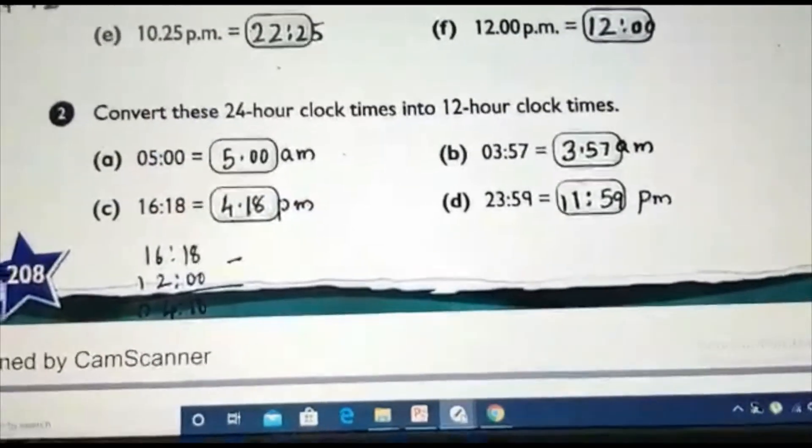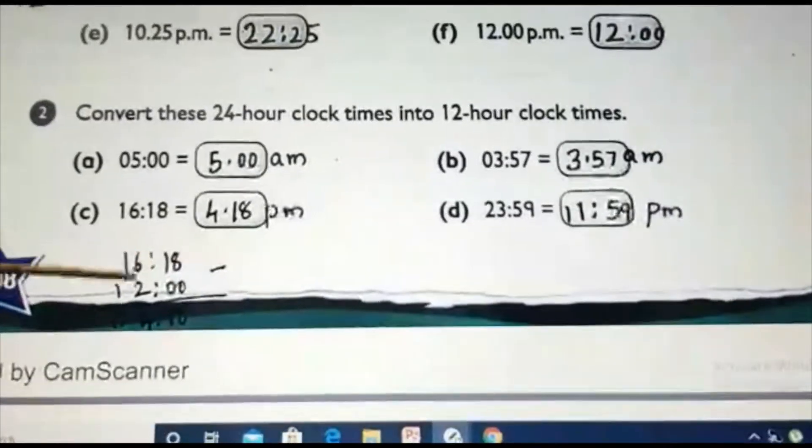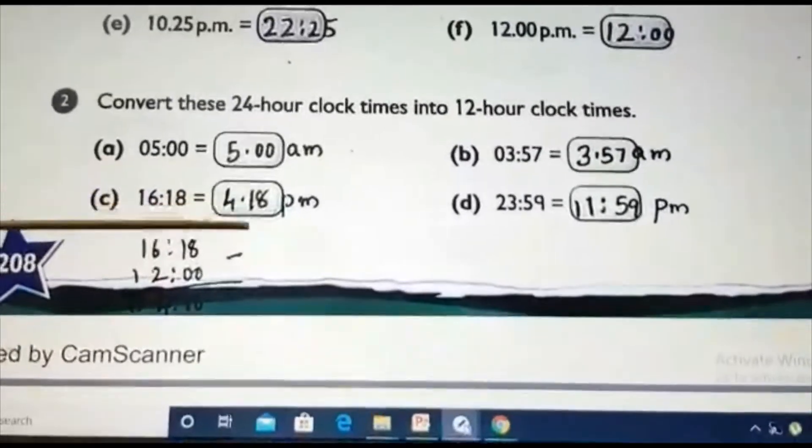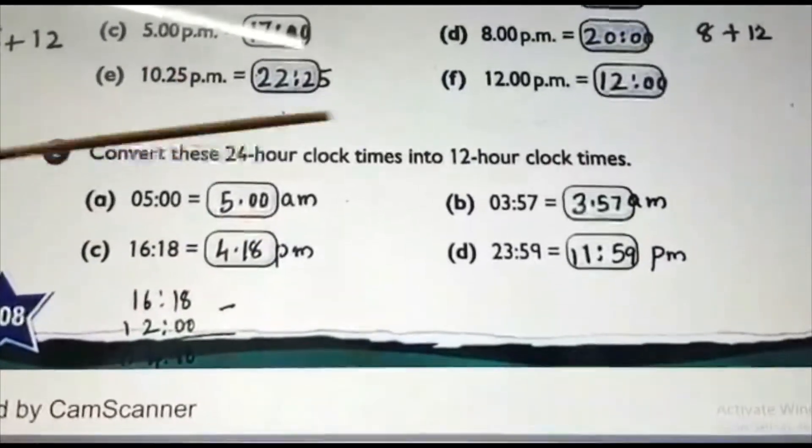16:18. It is more than 12. So, what I should do? 16:18 minus 12:00. So, it will be 4:18. So, 4:18 PM. If you are not writing AM or PM, you will lose your mark.